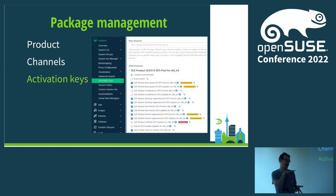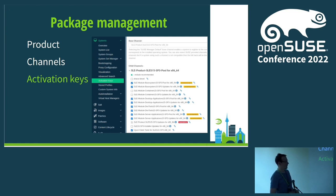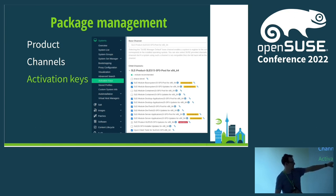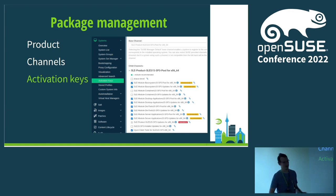Now we have channels and we need a single key or string to describe a whole list of channels to use. For this we have the activation key concept. You create one key, assign different channels to it, and every time the key is used it will assign those channels to a machine, image build, or whatever. There's a useful hint: you can create custom channels, assign a repository to synchronize into Uyuni, and include that custom channel in the activation key — so custom RPMs are passed to Uyuni-managed machines.